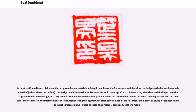This will not be the case if paper is embossed from behind, where the matrix and impression read the same way, and both matrix and impression are in relief. However, engraved gems were often carved in relief, called cameo in this context, giving a counter-relief or intaglio impression when used as seals. The process is essentially that of a mold.